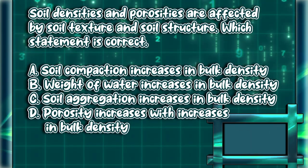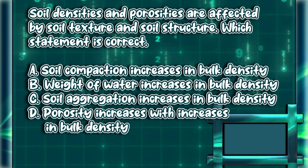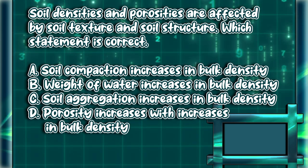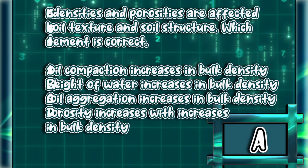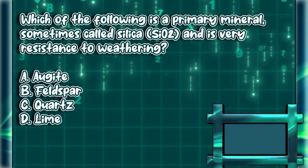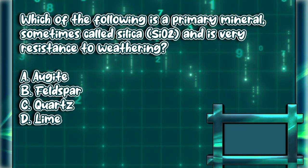Soil densities and porosities are affected by soil texture and soil structure. Which statement is correct? A) Soil compaction increases bulk density, B) Weight of water increases bulk density, C) Soil aggregation increases bulk density, D) Porosity increases with increases in bulk density. The answer is letter A.